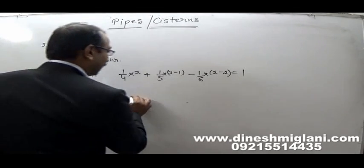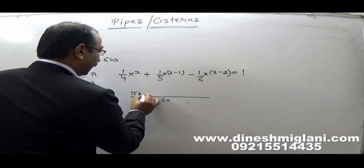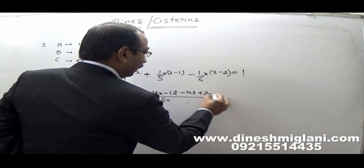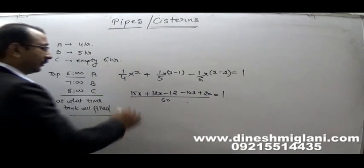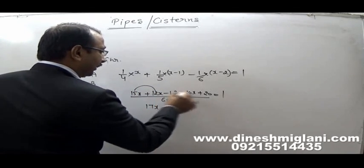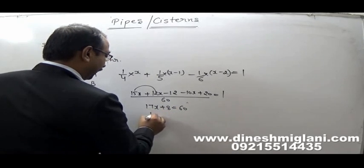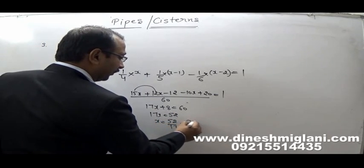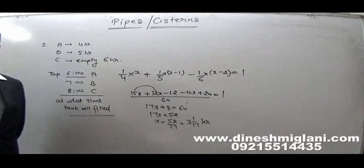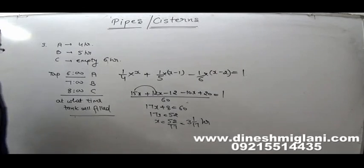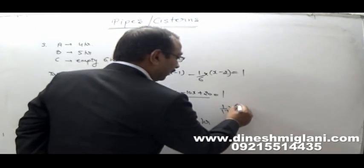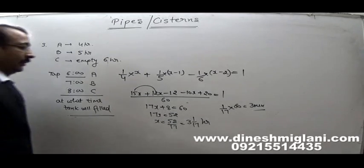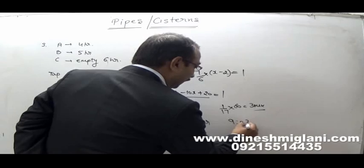With LCM 60: 15X + 12(X−1) − 10(X−2) = 60. That gives 15X + 12X − 12 − 10X + 20 = 60, so 17X + 8 = 60, 17X = 52, X = 52/17, which is approximately 3 and 1/17 hours. Converting 1/17 hours to minutes: (1/17) × 60 ≈ 3 minutes. So total time is 3 hours and 3 minutes. The tank was filled approximately at 9:03. That becomes your answer.